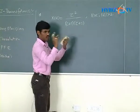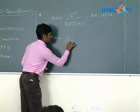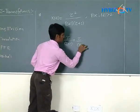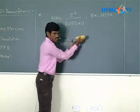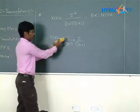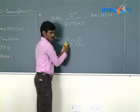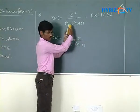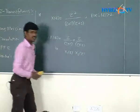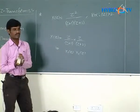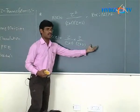We can split X(Z) into two functions: X(Z) equals [Z/(Z+1)] times [Z/(Z+2)], which equals X1(Z) times X2(Z). When multiplying these two functions, Z times Z gives Z squared in the numerator, and (Z+1)(Z+2) in the denominator, which matches the original. This is the convolution property in inverse Z transform — multiplication of individual Z transforms corresponds to convolution of sequences.